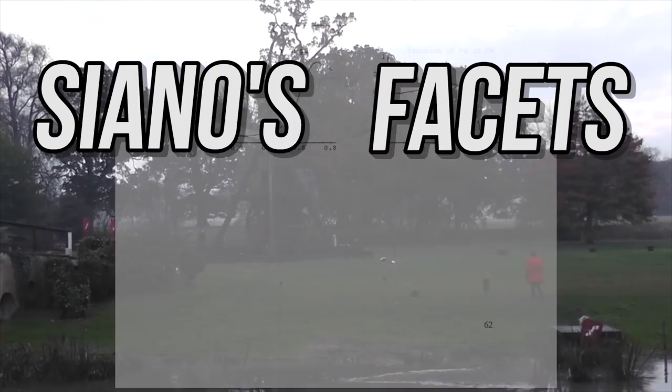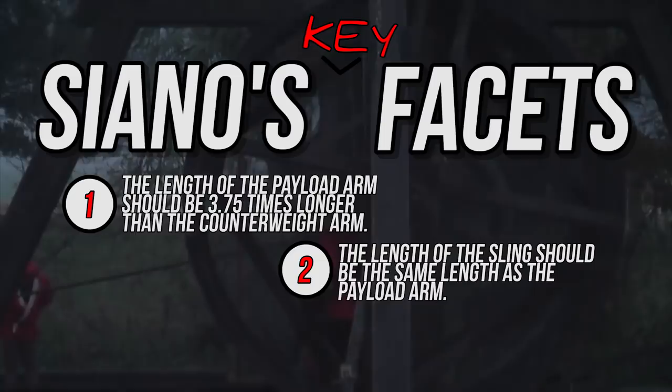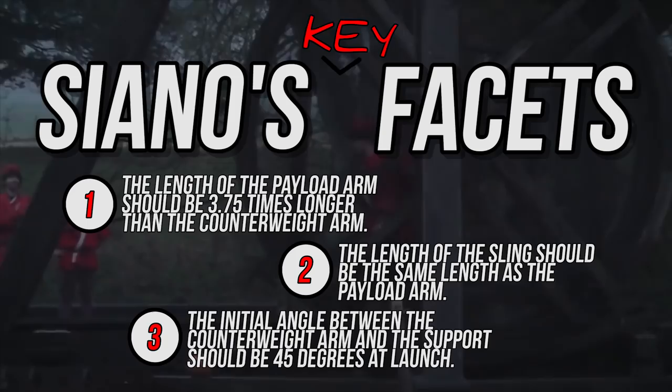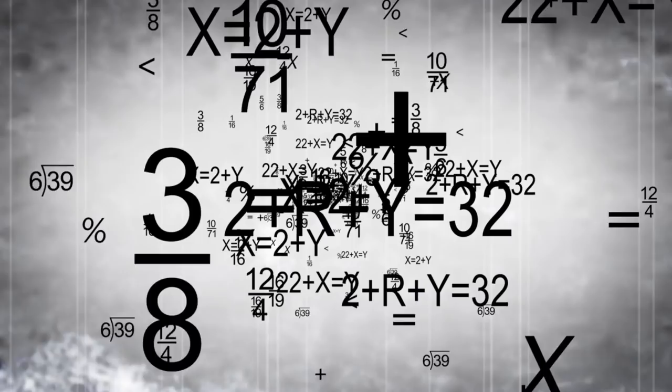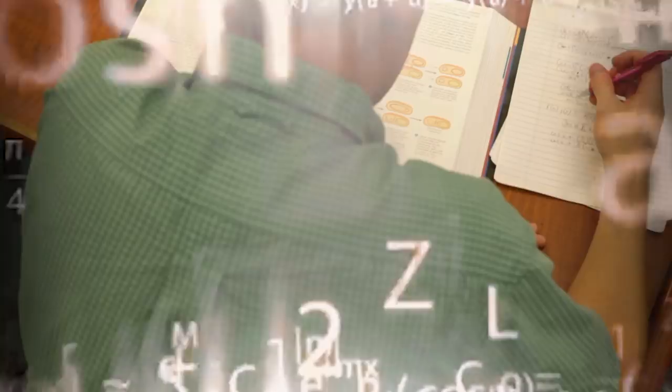Number one: the length of the payload arm should be 3.7 times longer than the counterweight arm. Number two: the length of the sling should be the same length as the payload arm. And finally, number three: the initial angle between the counterweight arm and the support should be 45 degrees at launch. There is a whole slew of other equations and optimization techniques included in Sciano's paper, including many page-long derivations in differential equations.